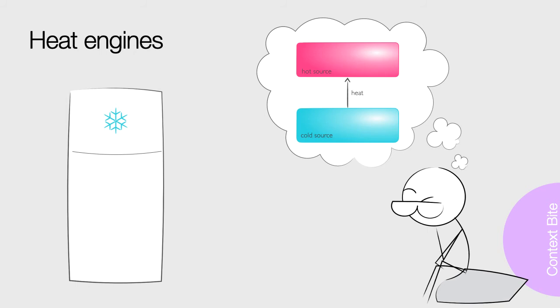Rudolf Clausius was also thinking about steam engines, but he focused on the flow of heat. Clausius said heat does not pass from a body at low temperature to one at high temperature without an accompanying change elsewhere, or at least something equivalent in German.